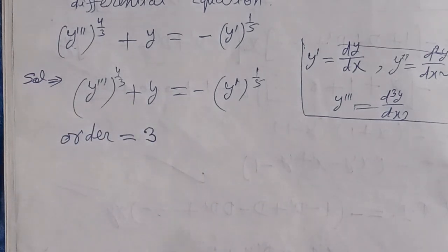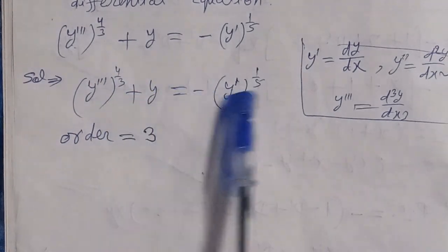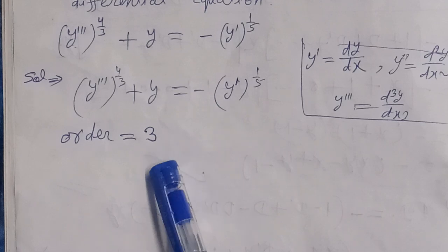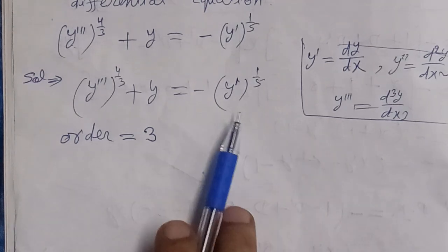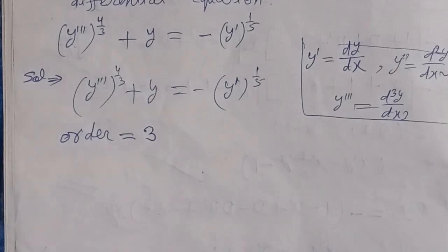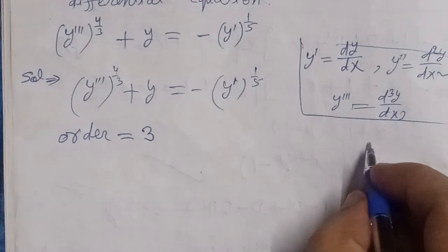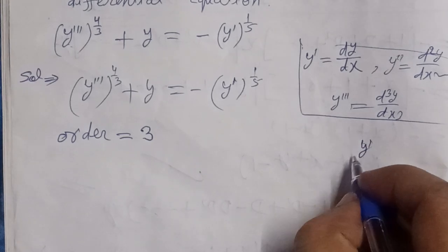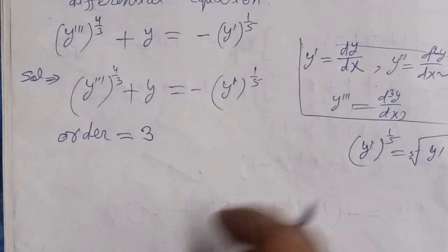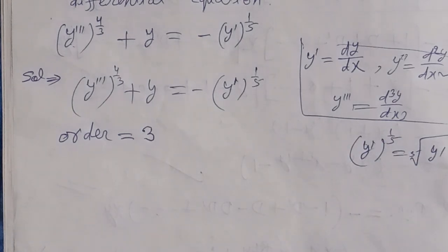But if we want to find the degree, the first task is to remove these radicals — the fractional powers. We need to convert fractional powers to whole numbers. Here, y dash to the power 1 by 5 means the fifth root of y dash. So we will remove this radical from the equation.